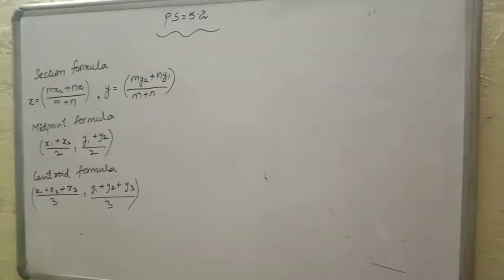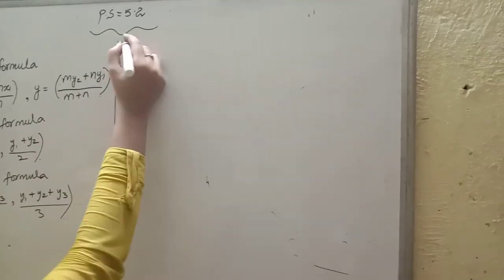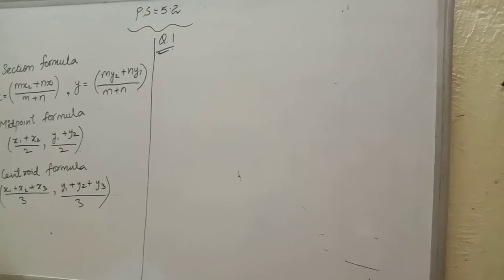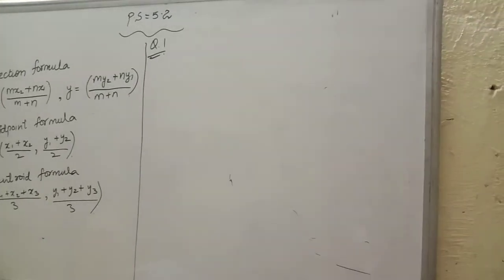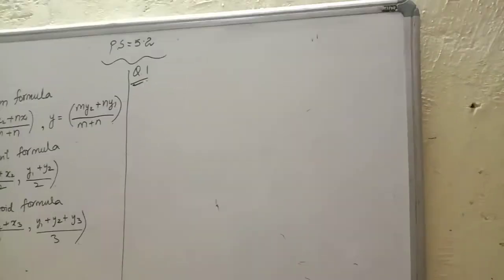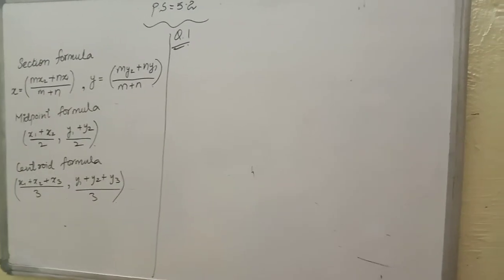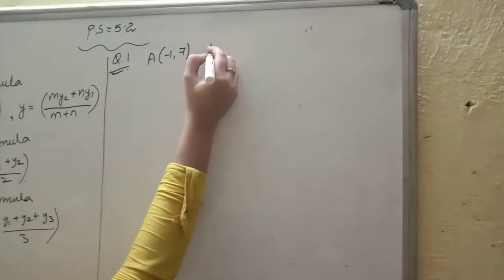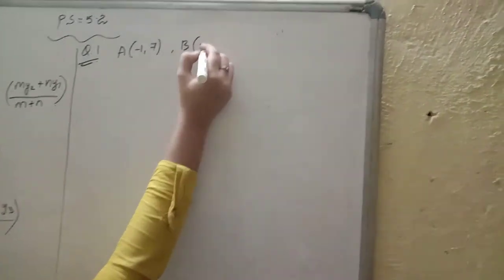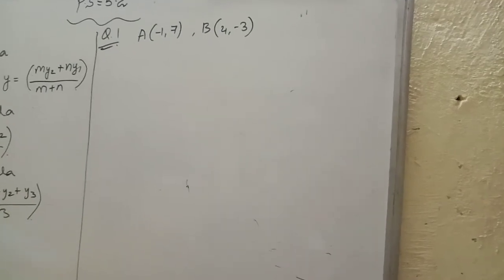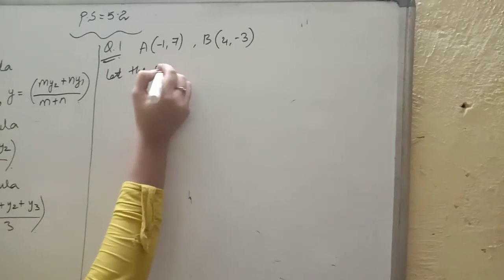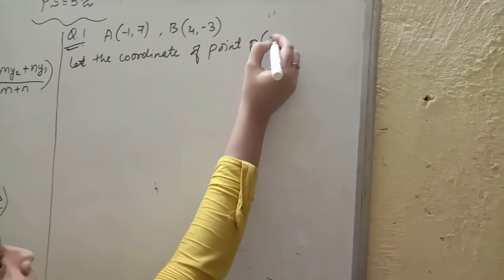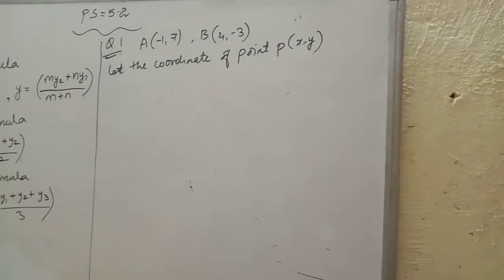First we will start with Question Number 1 of Practice Set 5.2. In this question, we have to find the coordinate of point P, if P divides the line segment joining A and B in the ratio 2:3. Here ratio is given as 2:3. A is given as (-1, 7) and B is given as (4, -3). Let the coordinate of point P be (x, y).